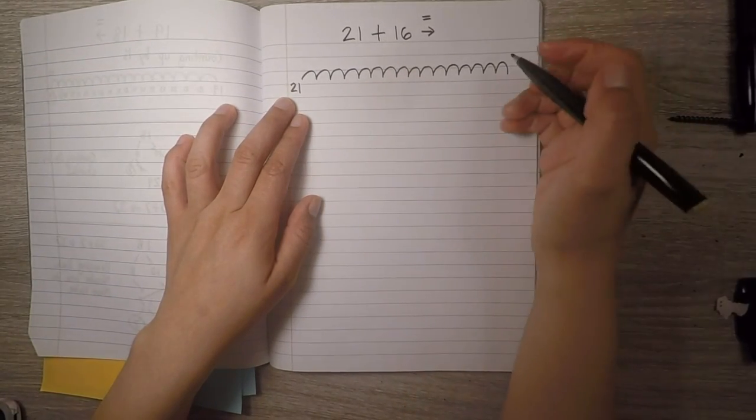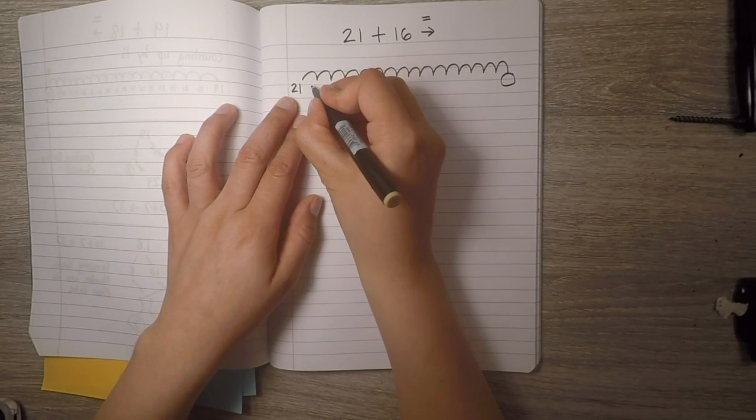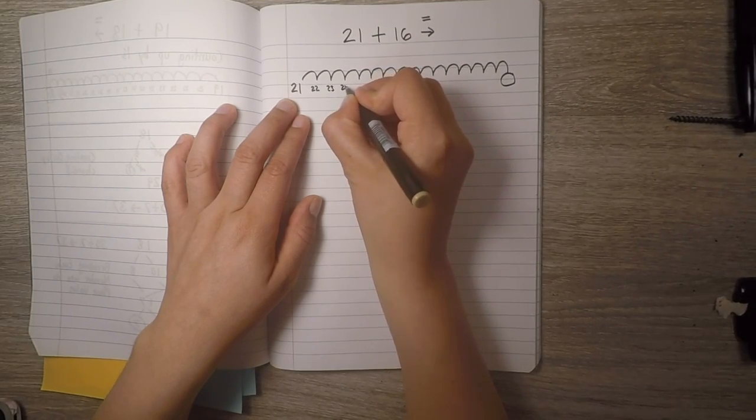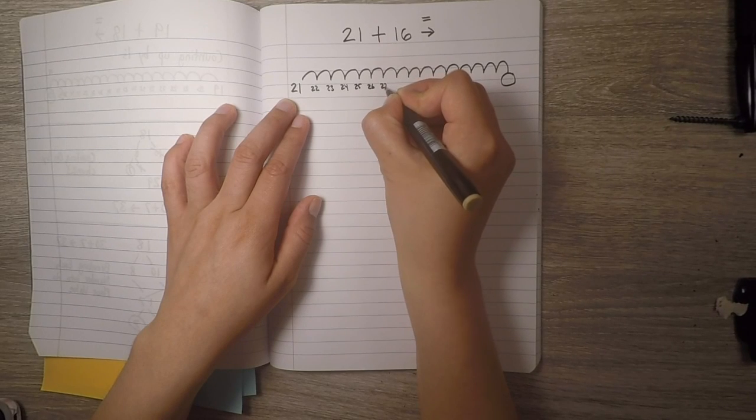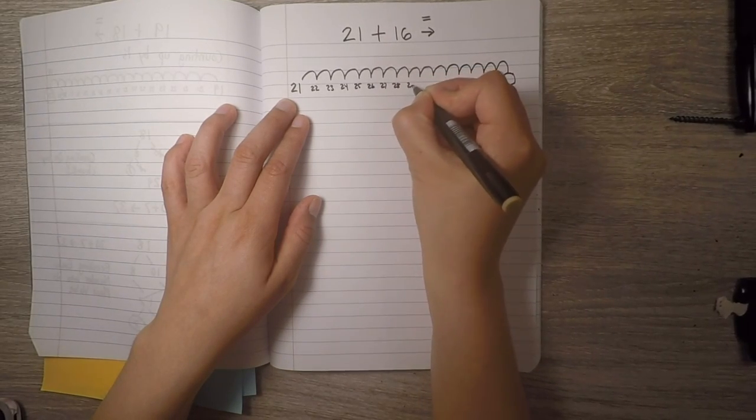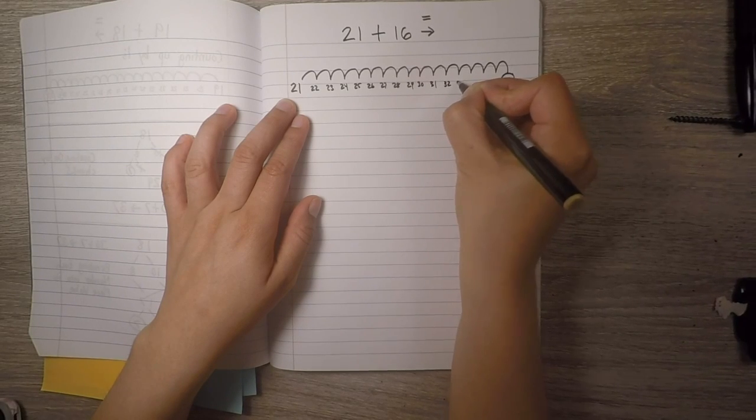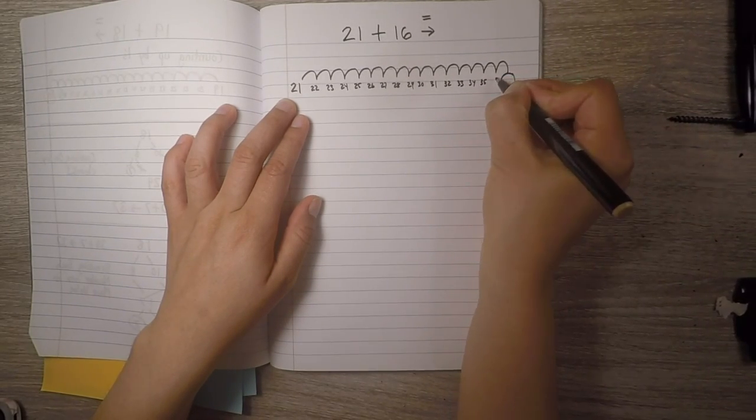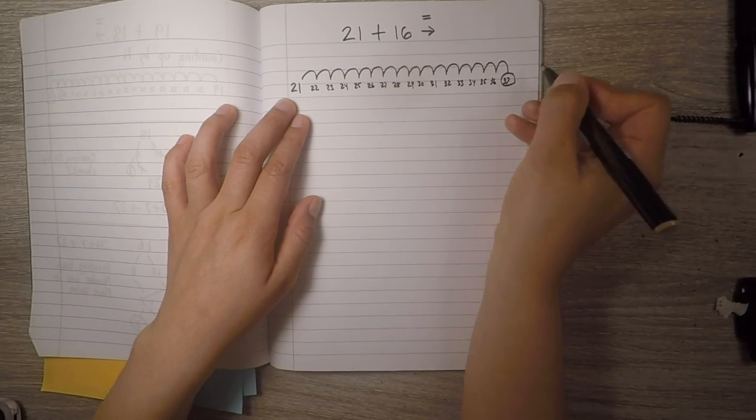So to solve what that number would be, I would have to go back and label these bumps. Ready? 22, 23, 24, 25, 26, 27, 28, 29, 30, 31, 32, 33, 34, 35, 36, 37.